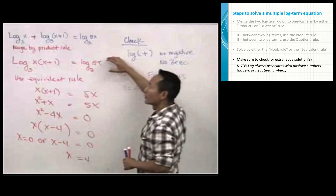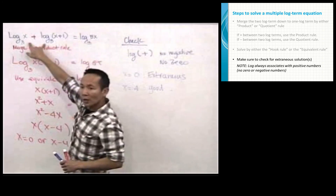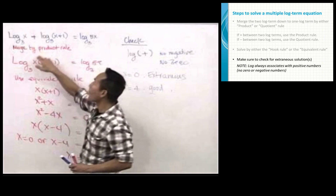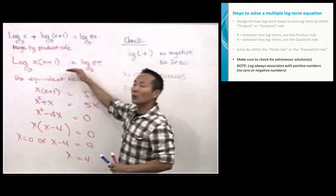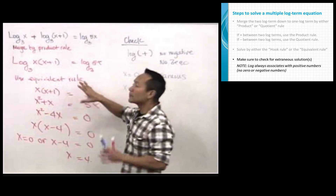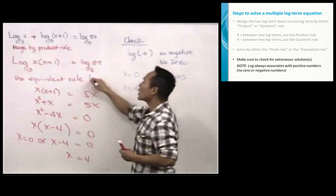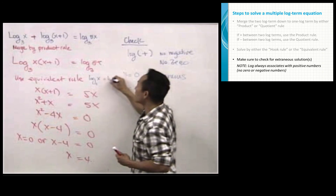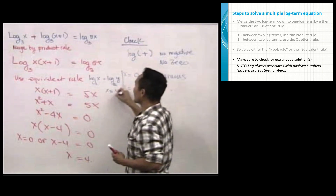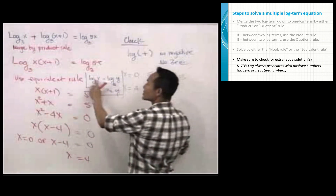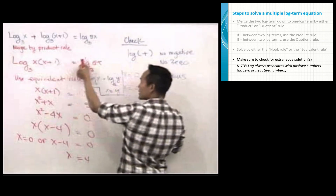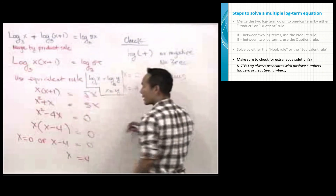This is the quick way to solve multiple log term equations. I merged the first two log terms by the product rule because there is addition between them. Then I used the equivalent rule instead of carrying the third log term over. The equivalent rule states: if log base A of x equals log base A of y, then x equals y. So after merging to one log on each side with the same base, you drop the logs — this equals that — and solve.